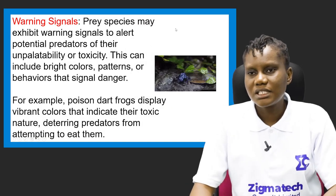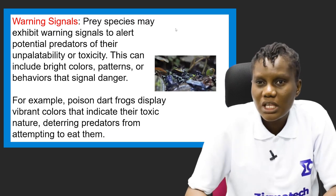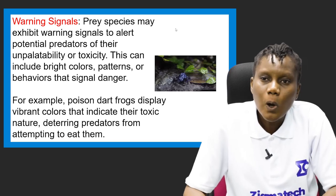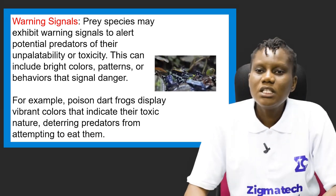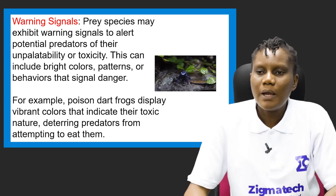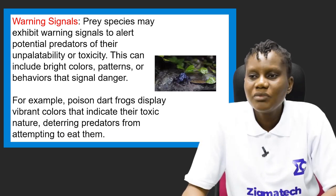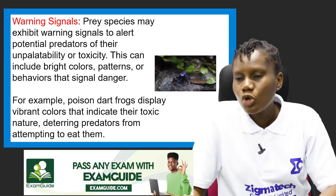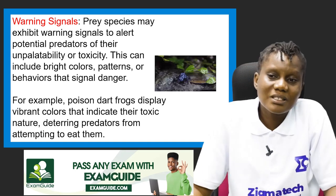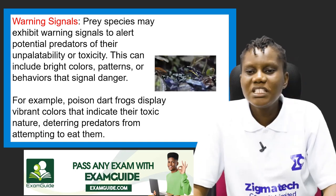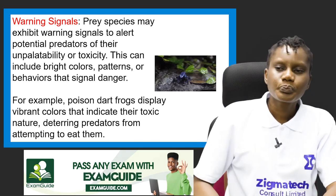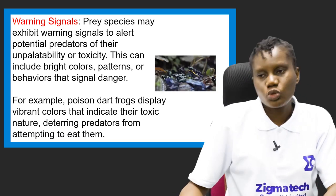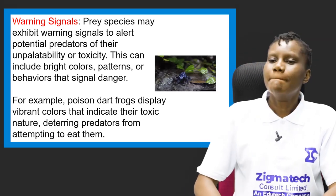The third prey adaptation is warning signals. Prey species may exhibit warning signals to alert potential predators of their unpalatability or toxicity. This can include bright colors, patterns, or behaviors that signal danger. For example, the poison dart frog displays vibrant colors that indicate its toxic nature, deterring predators from attempting to eat it. This is a way prey have adapted to save themselves from predators.